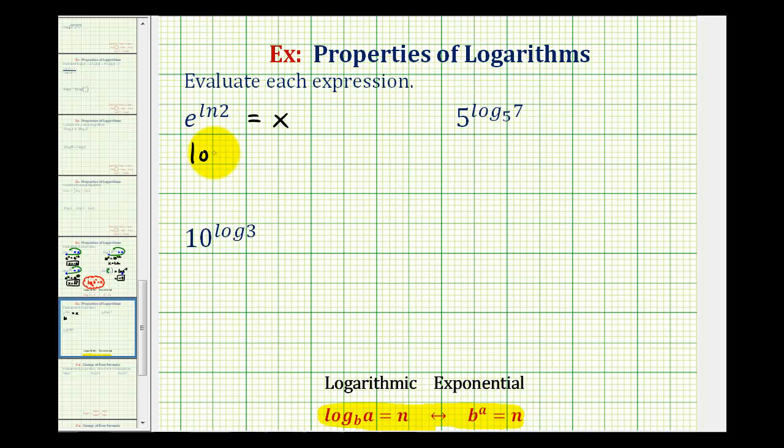We know we'll have a log in our log equation. The base is e, so we'll have log base e, which we'll write as natural log. A logarithm is an exponent. Here our exponent is natural log two. This is equal to x, so the number part of the log is x. Log base e of x is the same as natural log x, so we have natural log x equals natural log two.